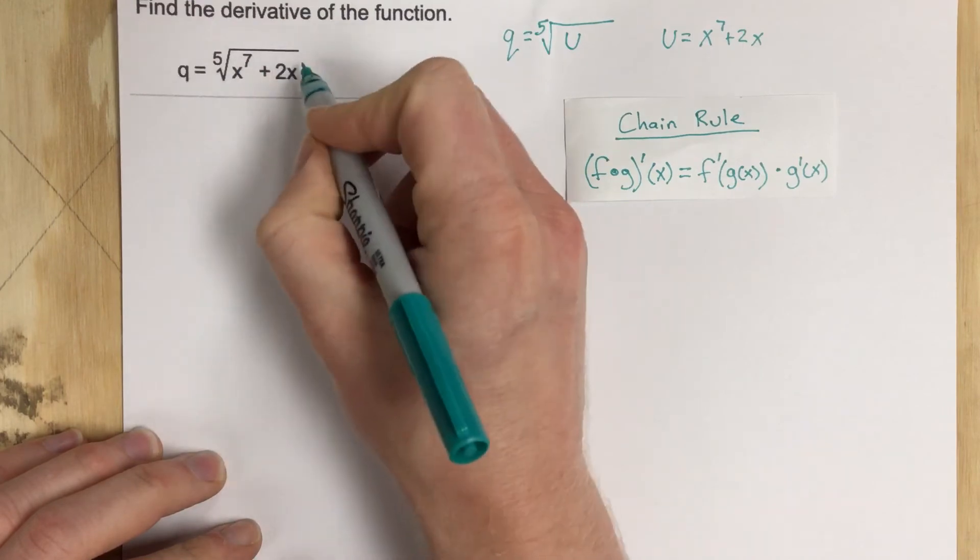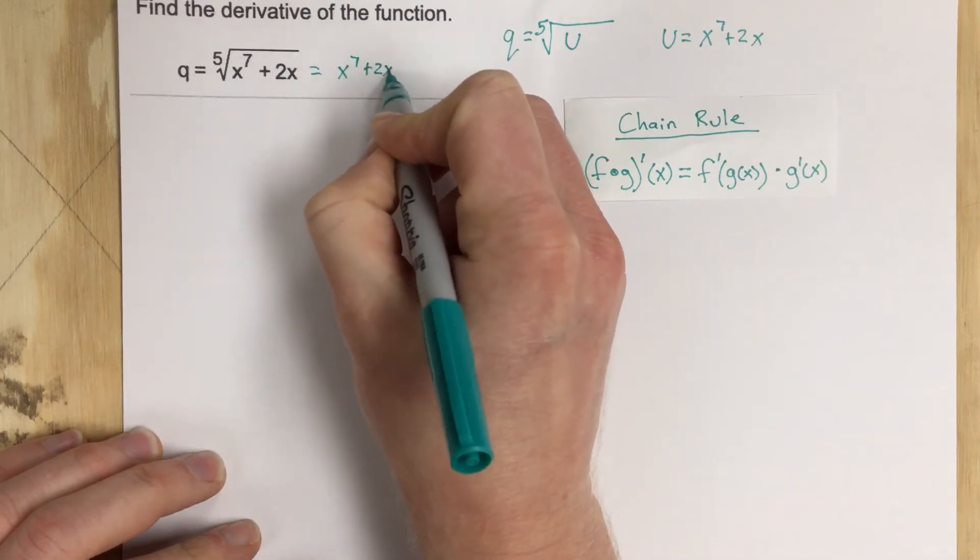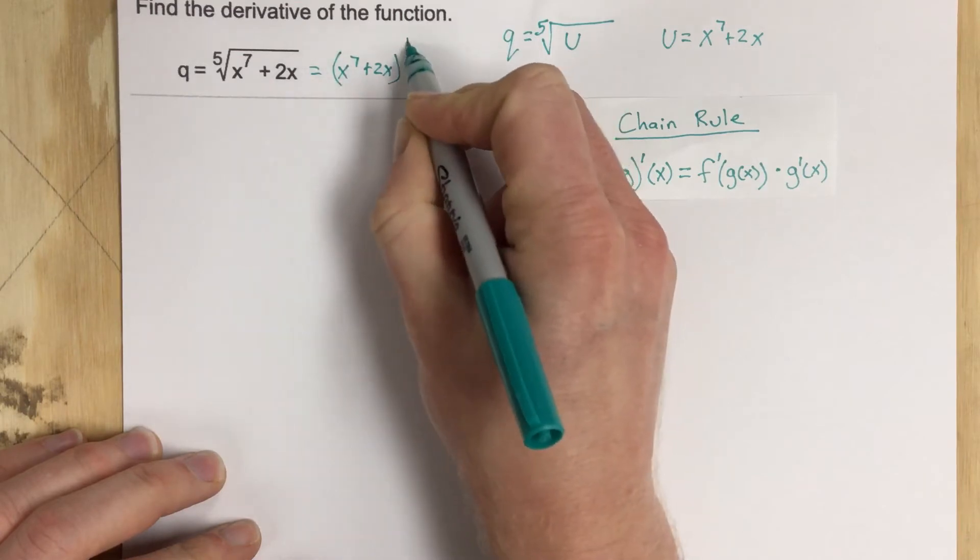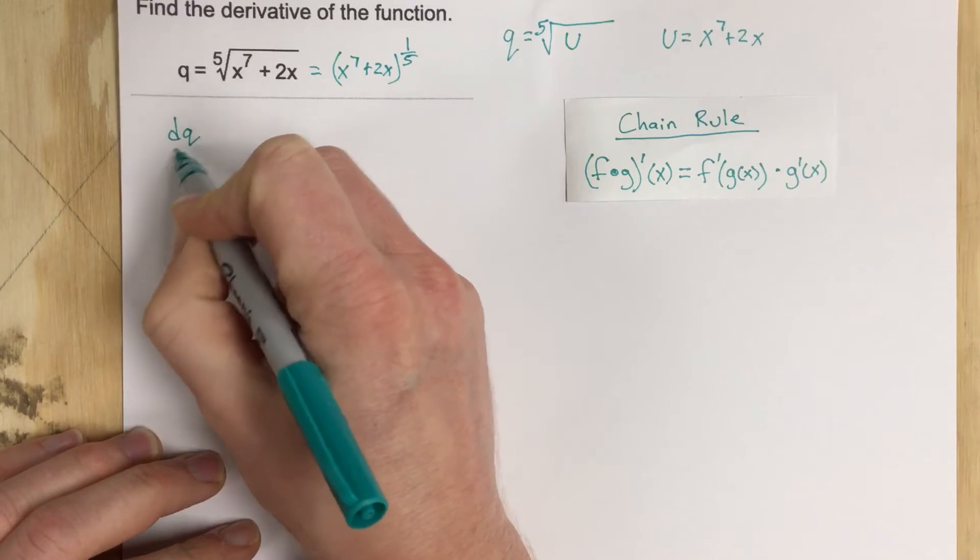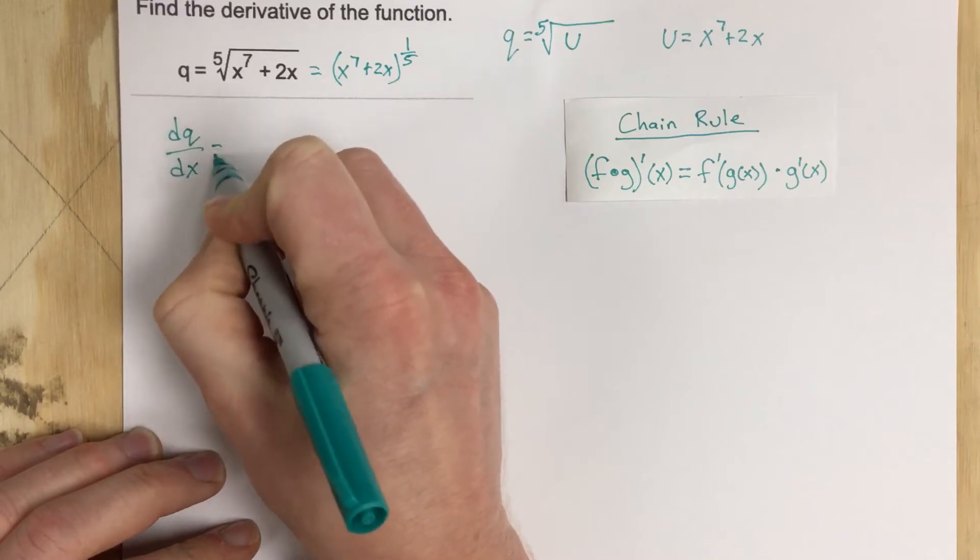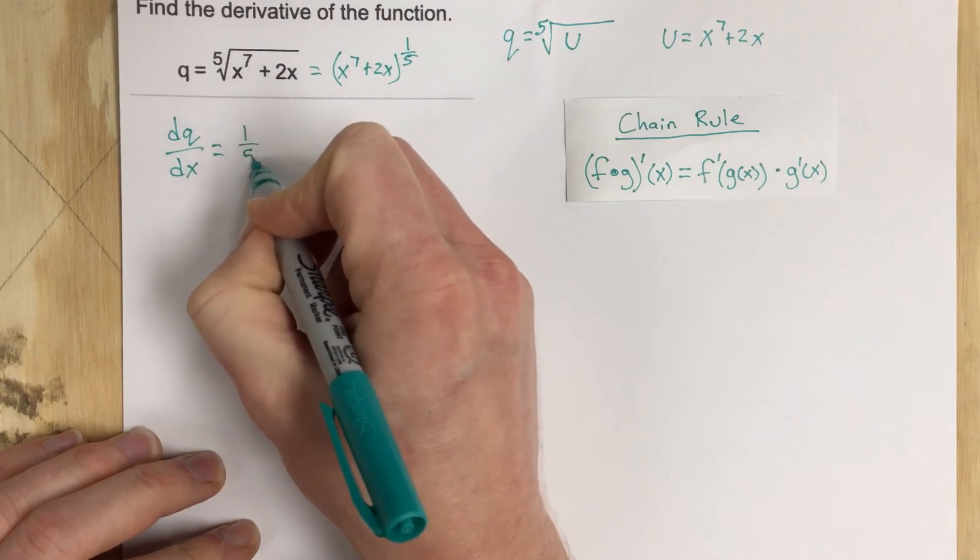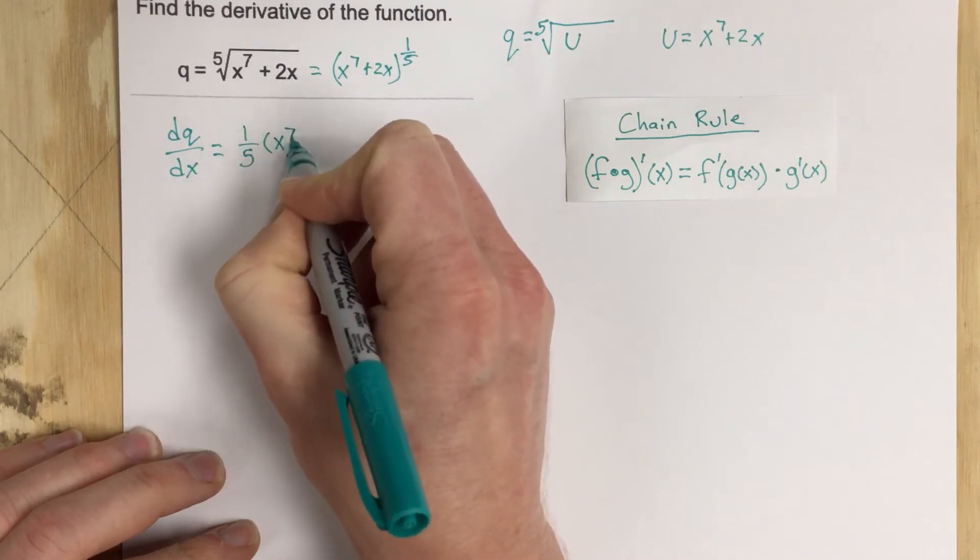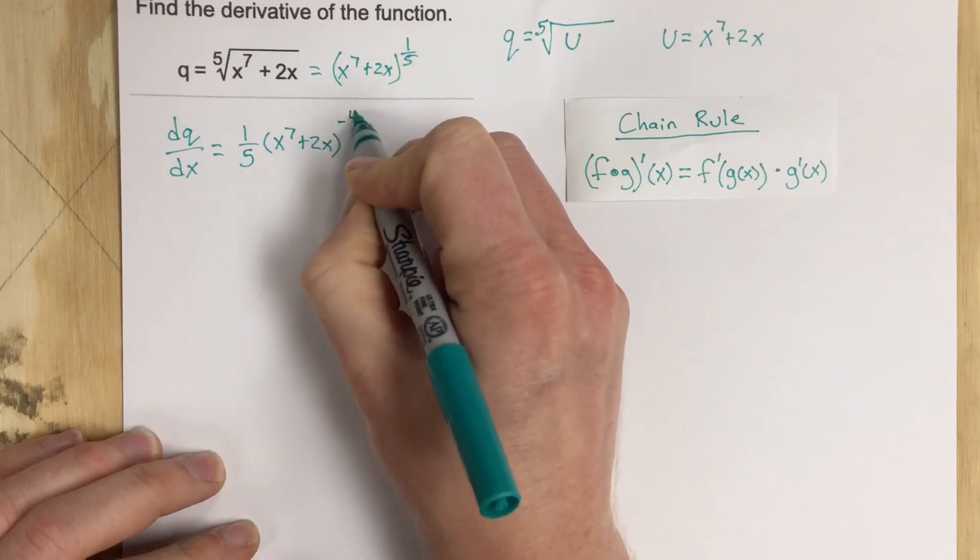So we're going to have the derivative of the outside, let's actually rewrite this as X to the seventh plus 2X to the one-fifth power. So when we do DQ over DX, the derivative, we do the derivative of the outside which will be one-fifth X to the seventh plus 2X. We subtract one from that, that's negative four-fifths.